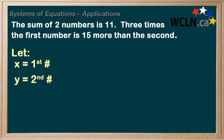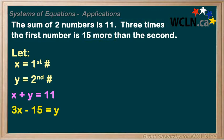We read in our question that the sum of the two numbers is 11, so our equation would be x plus y equals 11. We have one equation down, but two unknowns, so we need another relationship. We're also told that 3 times the first number is 15 more than the second number. So 3x minus 15 equals y, or equivalently, 3x equals y plus 15. It's the exact same thing.